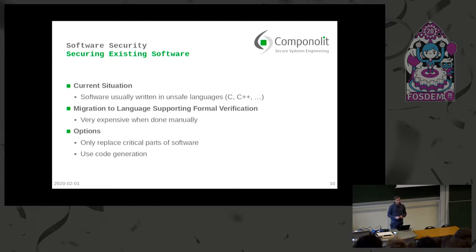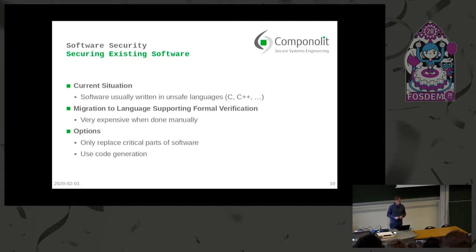We could think of two options. Maybe we could only replace critical parts of the software. Usually the most critical parts are those which interact with the outside world — often these are the communication protocol implementations. If we replace these parts with verified implementations, we already enhance the security. Another option is to use code generation: not do all implementation manually, but use a specification and generate code from it.